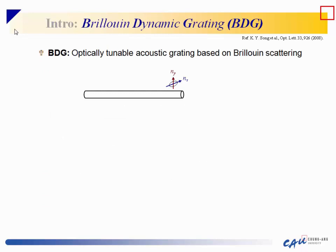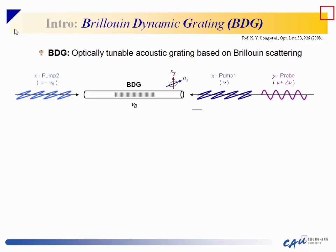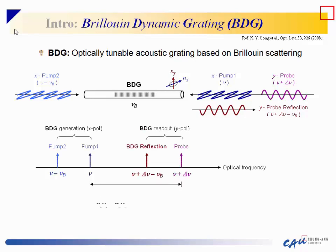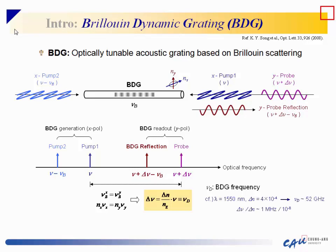Brillouin dynamic grating is an optically tunable acoustic grating based on Brillouin scattering. It is generated by counter-propagating pump waves via SBS and probed by an orthogonal polarization probe wave at a different optical frequency. The key parameter is the frequency offset between pump and probe waves, called the BDG frequency, which linearly depends on the birefringence of the fiber. The average value is about 50 GHz in a typical PM fiber.